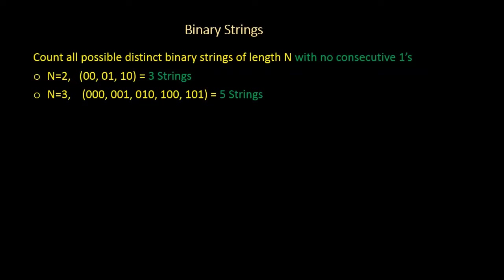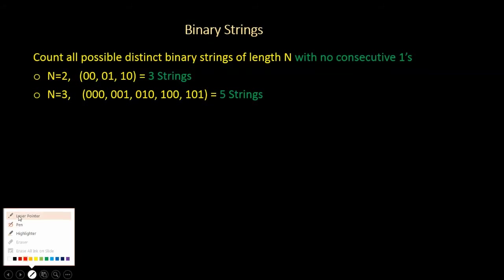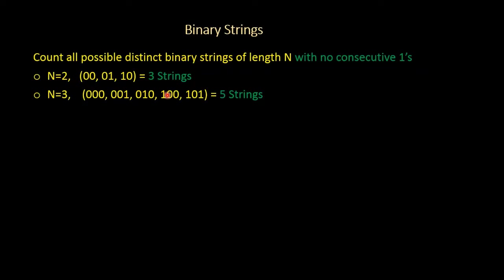For example, if you have n equal to 2, you can only form 3 strings. And for n equal to 3, you can form 5 strings.